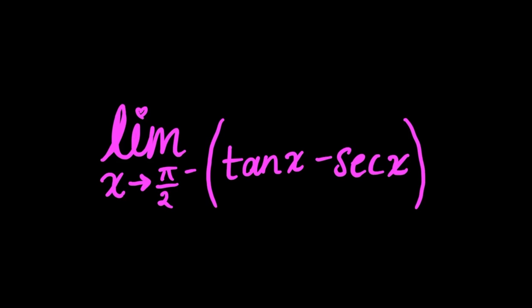So when I plug in pi over 2, I get that tan x goes to infinity because tan of pi over 2 is undefined. And if I plug in pi over 2 for secant x, I know that secant x equals 1 over cosine x. So 1 over cosine x, plugging in pi over 2 for cosine, gives 1 over 0, which equals infinity.